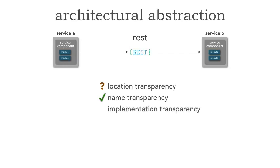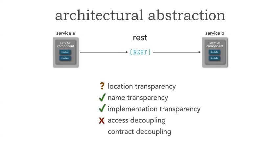How about implementation transparency? Most of you who use REST would say of course — any platform or language that can communicate with REST, I can communicate with. So yes, I do not know what service B is implemented in. How about access decoupling? Like messaging, no — if service B uses REST, I have to communicate with REST. I do not have access decoupling. And finally, contract decoupling — do I have to pass that product ID and quantity in? Yes, because there's no intermediary code that can do message enhancement or message transformation. So REST is very similar to messaging, with the question mark on location transparency depending on how it's implemented.